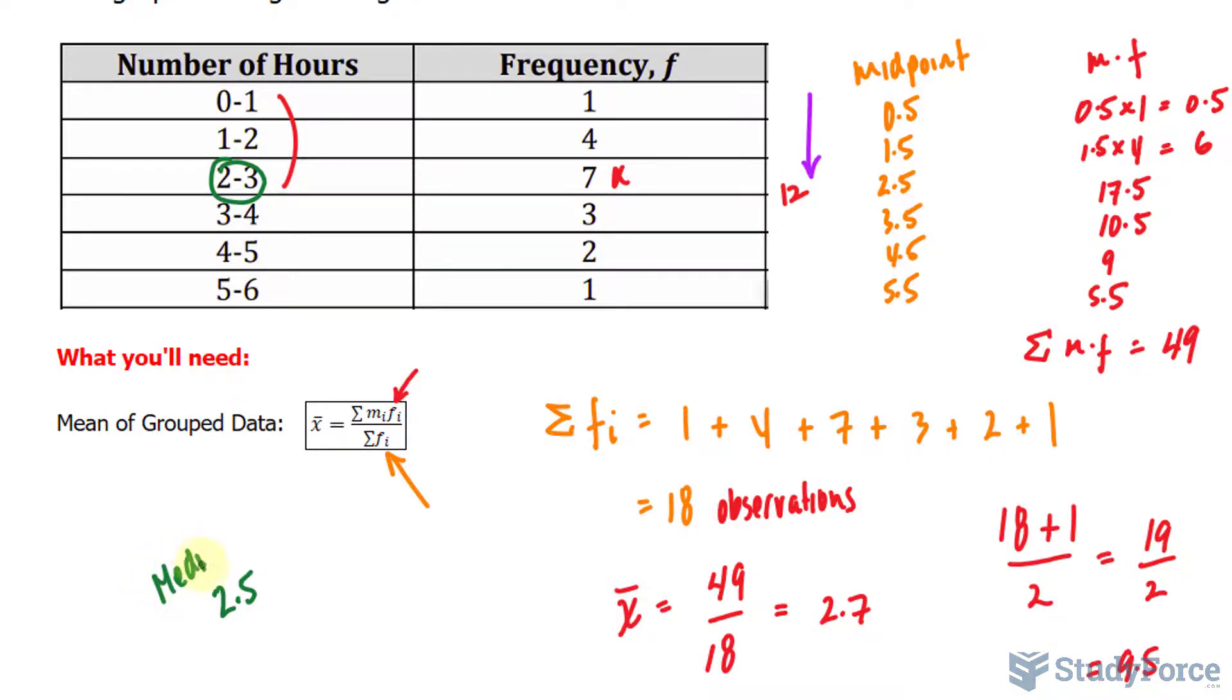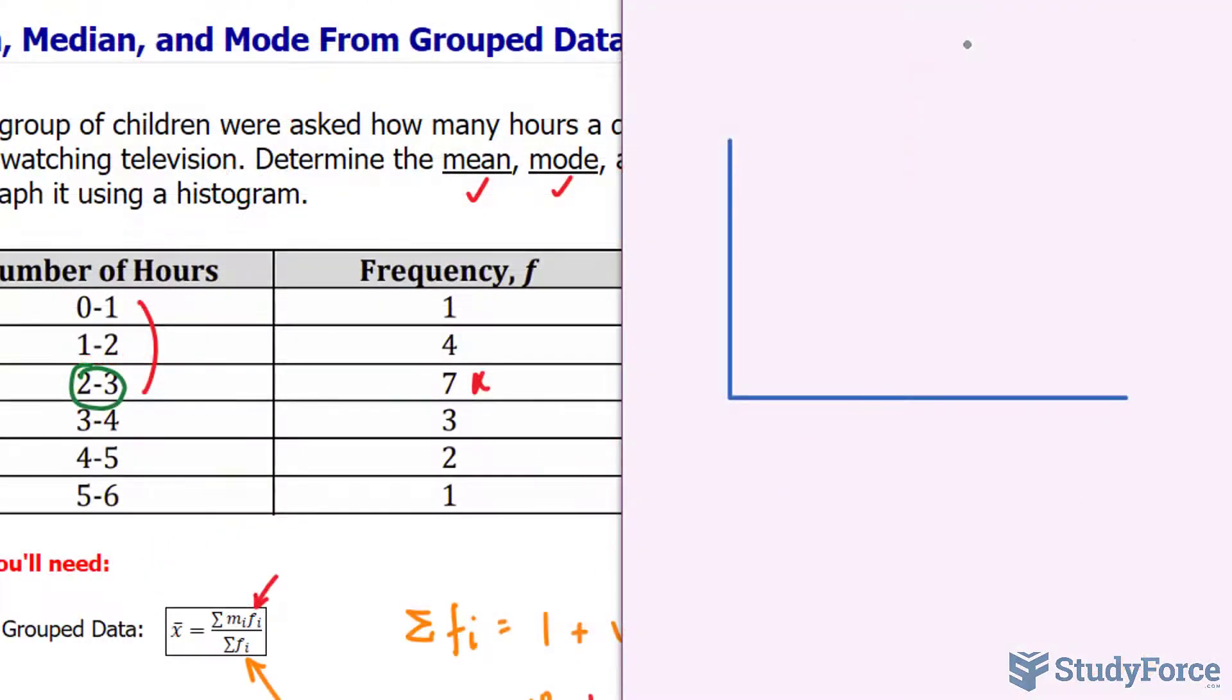Lastly, we will create a histogram. Along the x-axis will be the number of hours ranging from 0 to 1 all the way to 5 to 6. And the frequency will go along the y-axis. It doesn't go beyond 7.